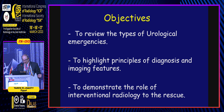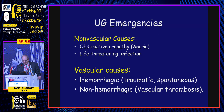The learning objectives of this talk are to review the types of urological and genital emergencies, to highlight principles of diagnosis and imaging features, and to demonstrate the role of interventional radiology in management of these emergencies. We have non-vascular causes like obstructive uropathy with significant oliguria or anuria, and life-threatening infection. Vascular causes are either hemorrhagic due to trauma or spontaneous hemorrhage, and non-hemorrhagic like vascular thrombosis.